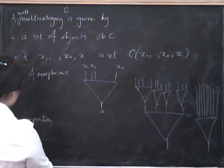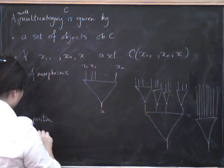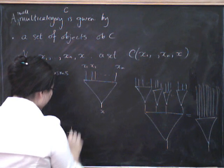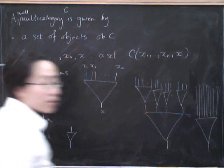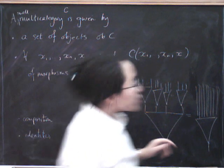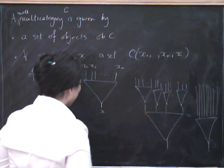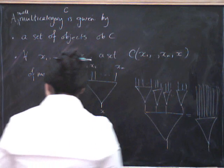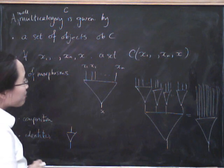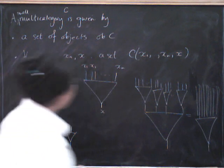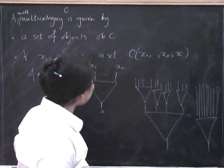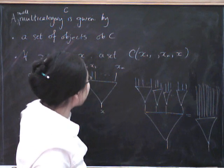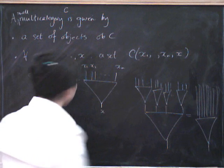We also have identities, which are just multi-arrows that happen to have only one thing going in and one thing going out. By the way, you can also have no objects going in and one object going out, but you always have to have one object going out. So multi-categories are fun because they give you ways of talking about operations that take N inputs and produce one output at the end of it.